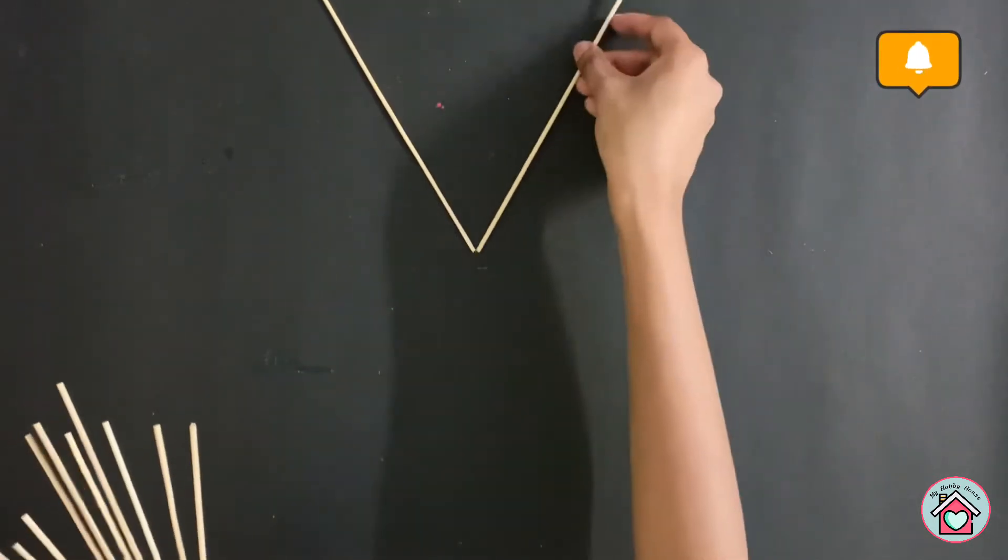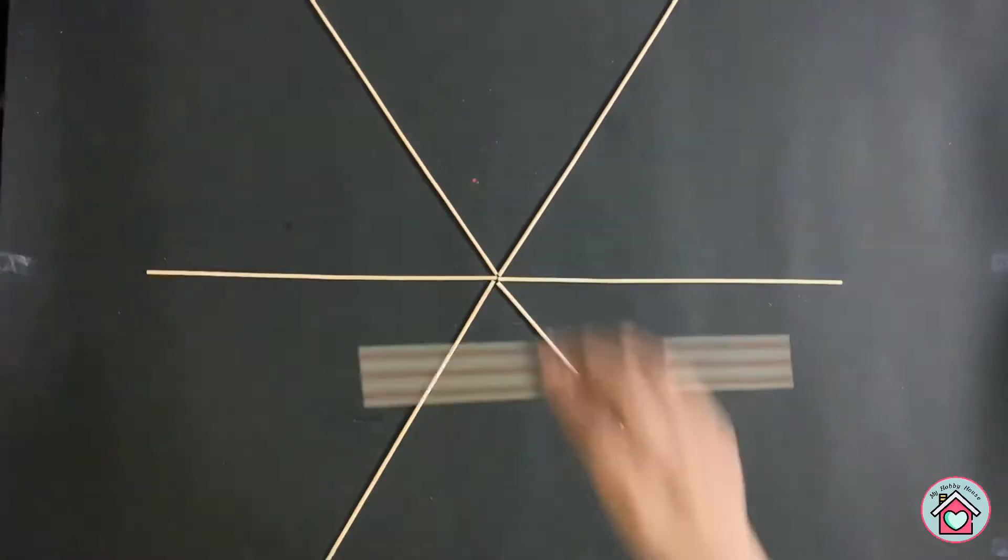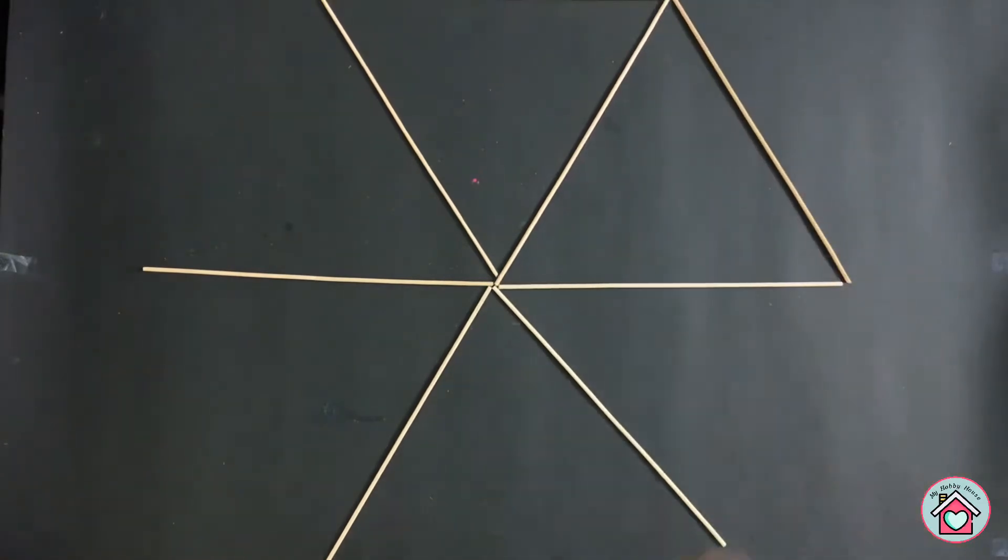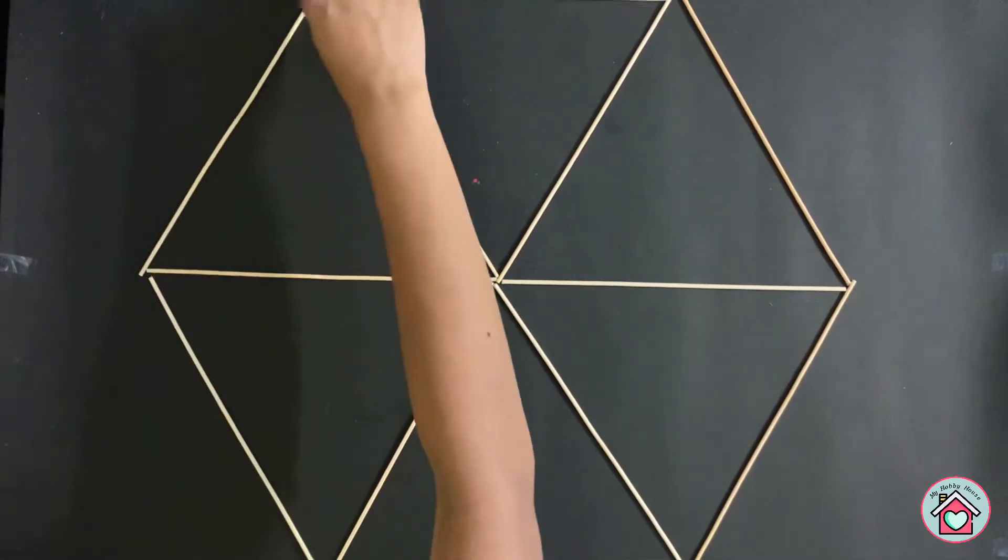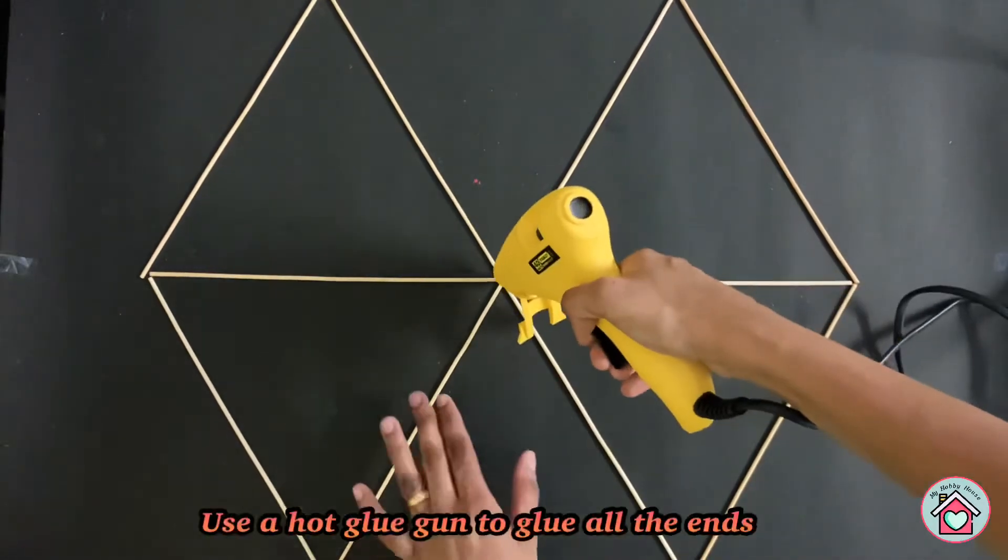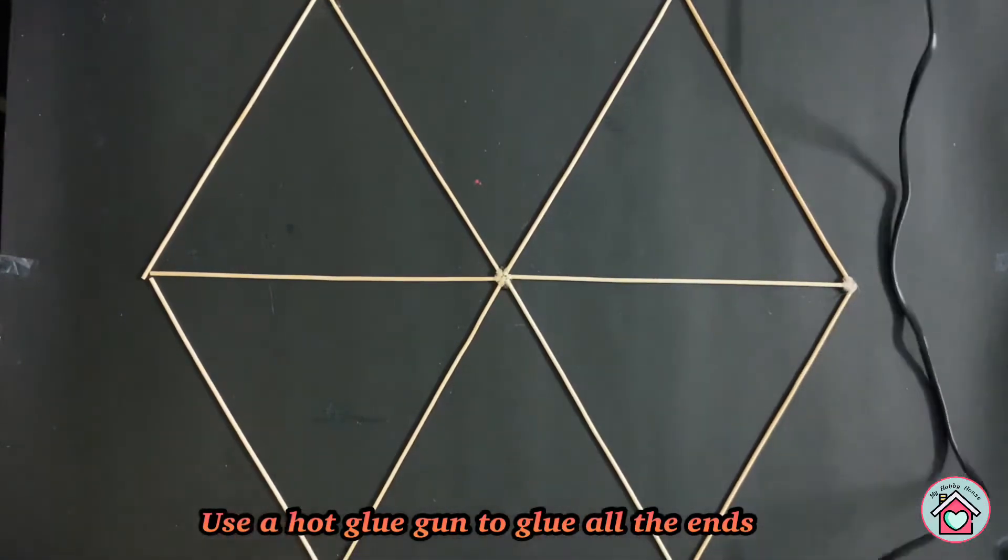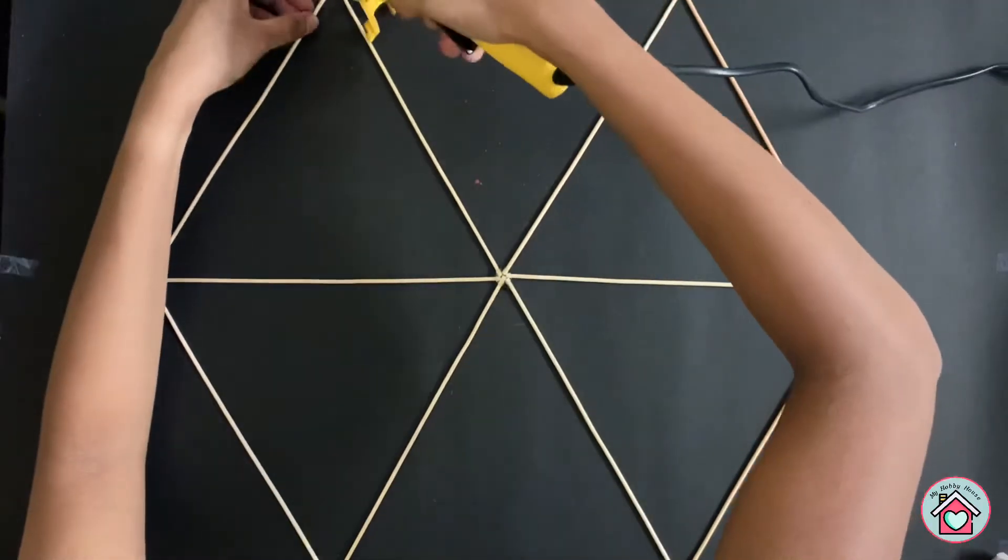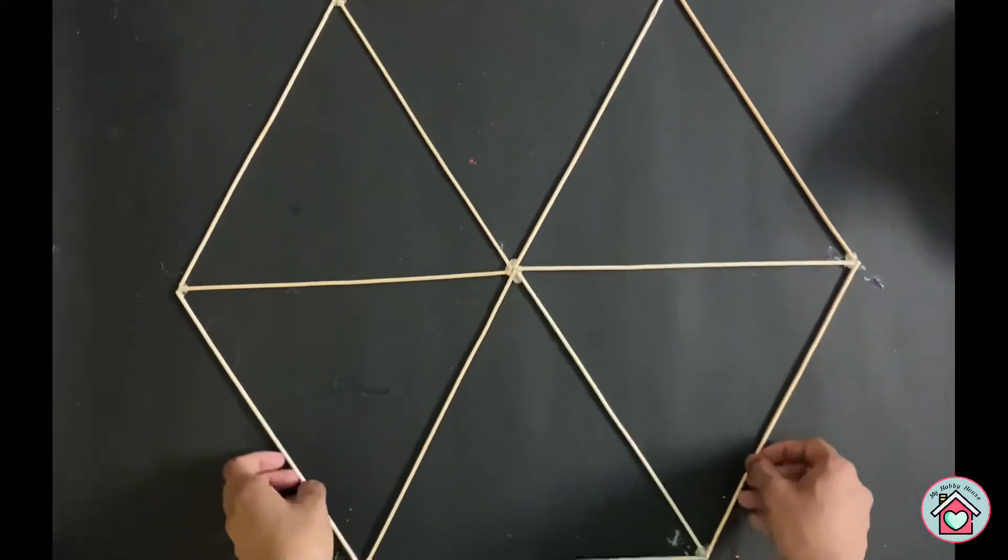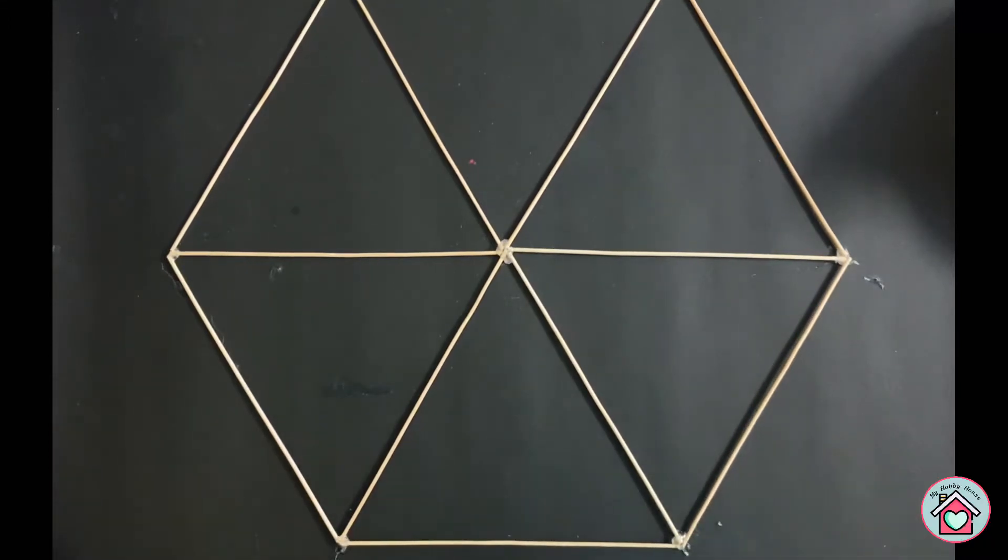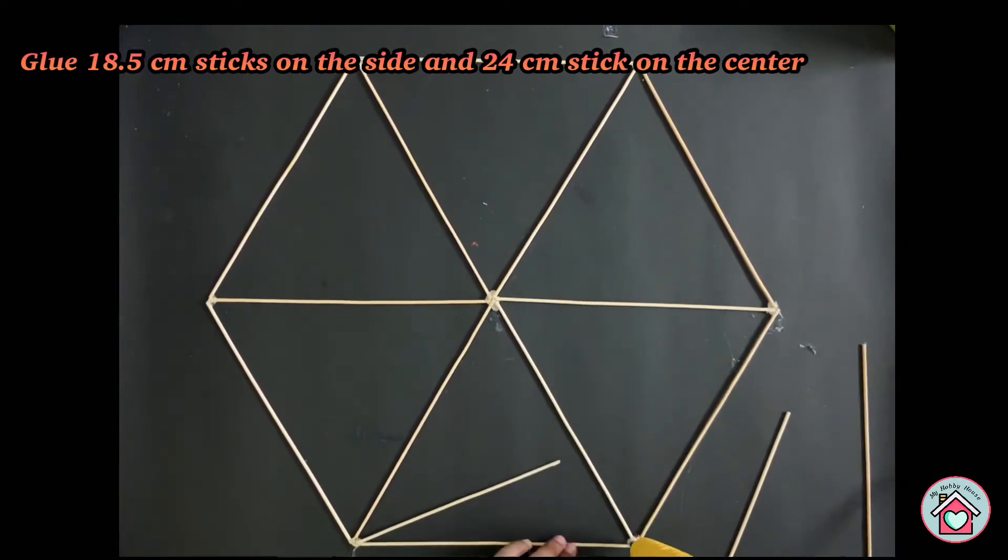Then arrange the sticks in a hexagonal shape as shown in the video. Use a hot glue gun to glue all the ends. Glue 18.5 centimeter sticks on the sides and 24 centimeter stick on the center.